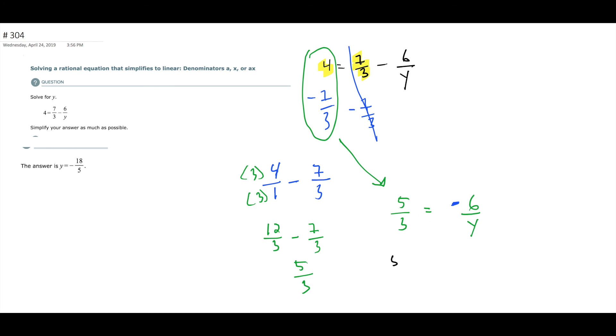Okay, yep, so 5Y equals negative 18, then divided by 5, divided by 5, Y equals negative 18 over 5.